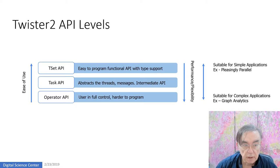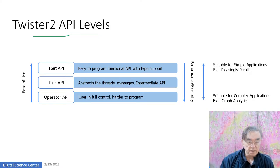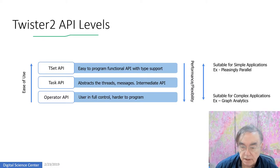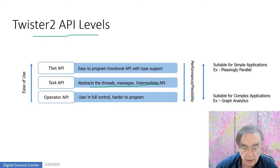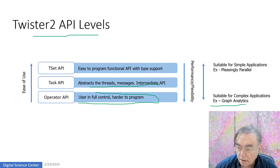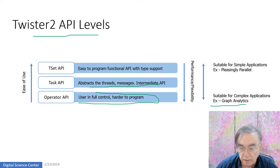Here we have the levels of API. The easiest to use is the TSet, which is the equivalent of the Spark RDD — it's functional-style programming with support for types built into the TSETs, especially suitable for simple programs. The task API abstracts the threads and messages — it's an intermediate API. The operator API is the hardest to program, and that's where you'd do graph analytics with latently irregular parallel codes. You have more flexibility and performance at the bottom, and highly flexible, low-ish performance at the top — super easy to use, good to get started with.